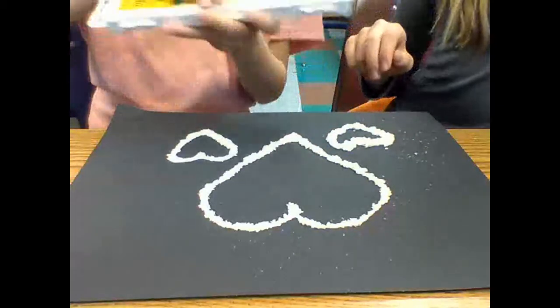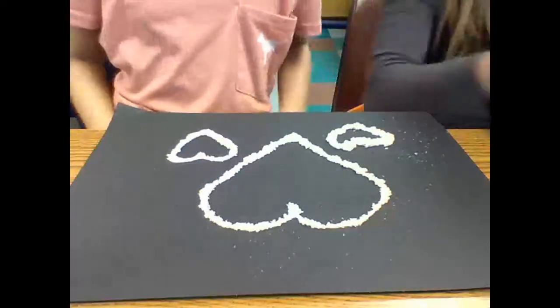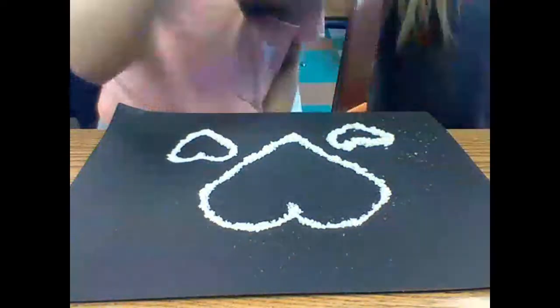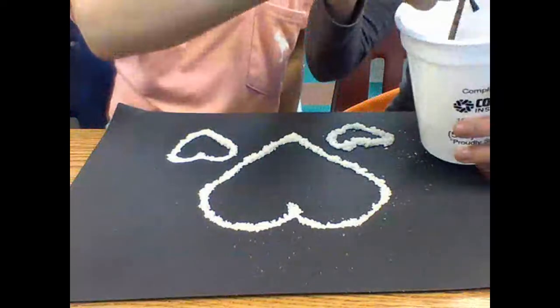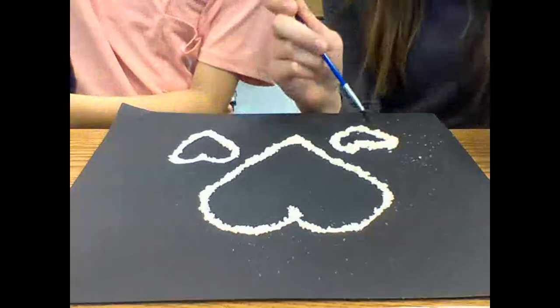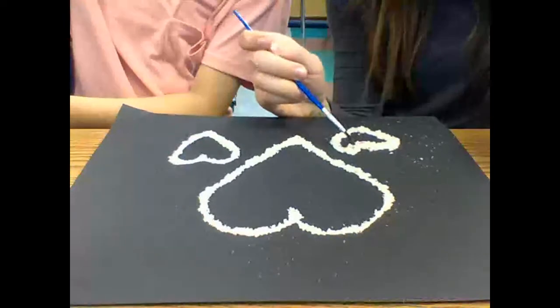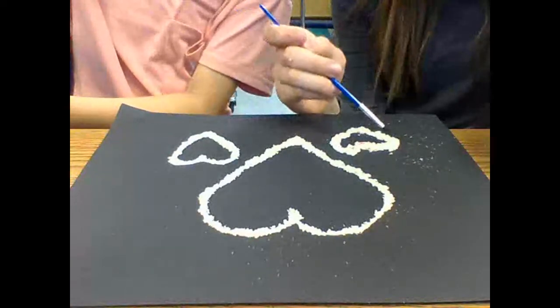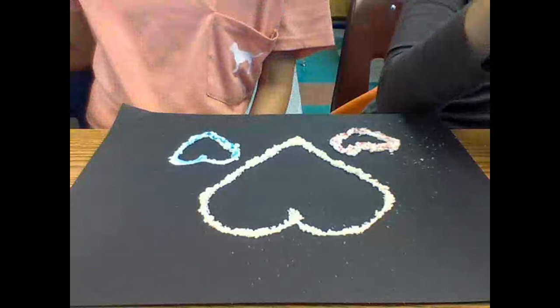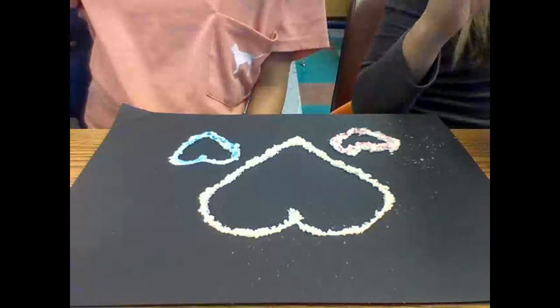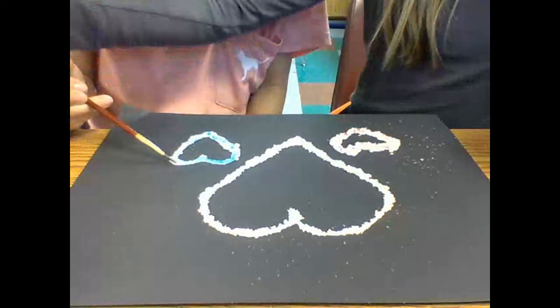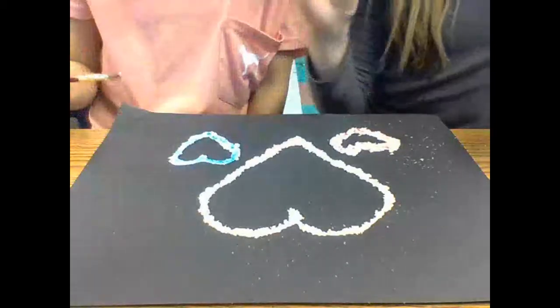After that, you want to take your watercolors. We're gonna use blue, pink, and purple. So you're gonna get your paintbrush wet in a cup of water and dip it in whichever color you want first. Just put it onto your salt and it will start to spread. It might not spread, so you might just want to color it in. We'll get back to you when we're finished.